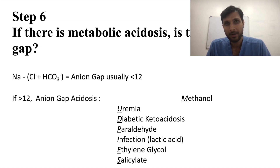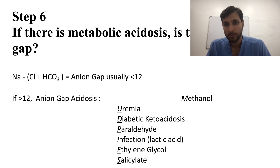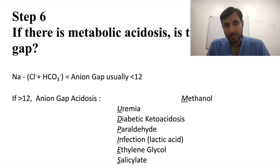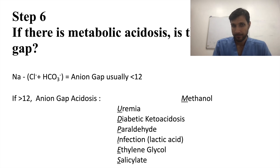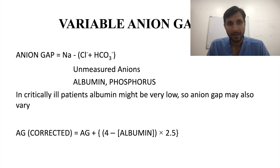Step 6: if the patient has metabolic acidosis, is there an anion gap? We look for hidden ions. The formula is: anion gap = sodium − (chloride + bicarbonate), normally less than 12. If more than 12, it is high anion gap metabolic acidosis. The causes are remembered by the mnemonic MUDPILES: methanol, uremia, diabetic ketoacidosis, paraldehyde, infections, lactic acidosis, ethanol/ethylene glycol, salicylates. Albumin, phosphorus, and unmeasured anions cause variable anion gap.